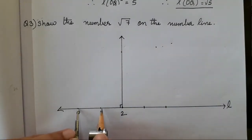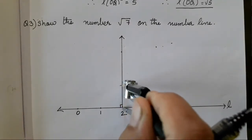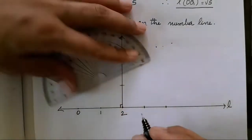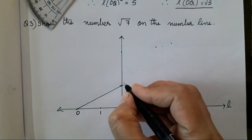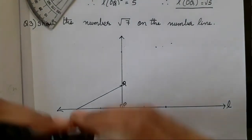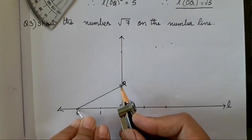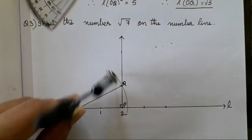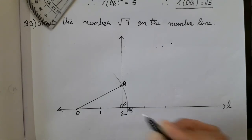Take a distance of 1 unit. Do the small markings because we have to find 2 to 3 angles. We have got a right angle. We will mark it as O or Q, and this as P. Now we will take this distance and draw an arc. This point is supposed to be root 5.